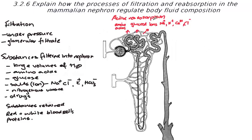When active reabsorption occurs, we also see passive movement — osmosis of water. H₂O moves via osmosis because, with 65% of sodium and chlorine ions having moved, there is a greater concentration of ions in the interstitial fluid and bloodstream, so water also moves via osmosis. The loop of Henle is really, really permeable to water, so we see passive movement by osmosis of water here too.